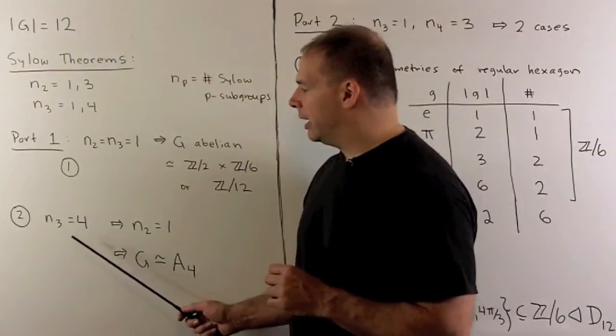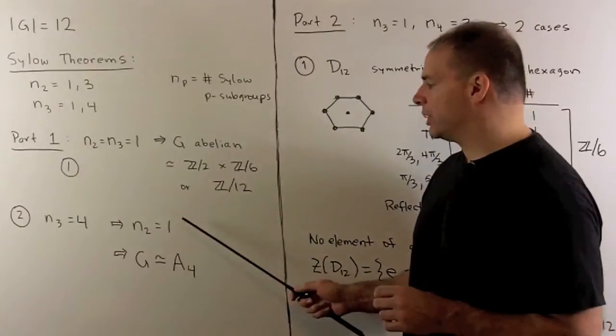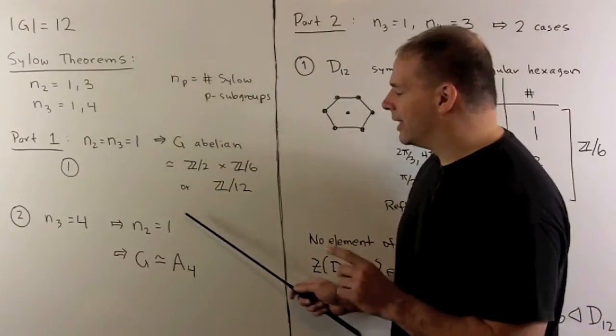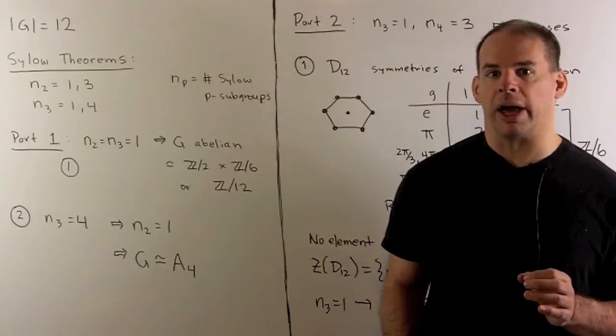Then we noted, if n sub 3 equals 4, we used a counting argument to show that n sub 2 equals 1, and then in this case, G was isomorphic to A4, the alternating group on four letters.